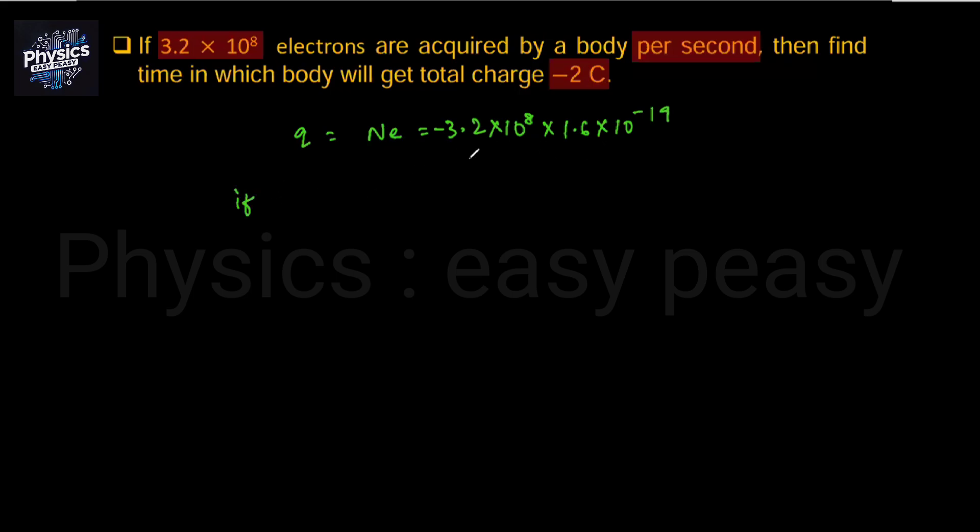If the amount of charge in 1 second is minus 3.2 into 1.6×10^-11 coulomb, the time taken is 1 second. So if we generate 1 coulomb charge, how much time is it?